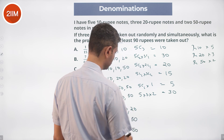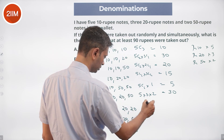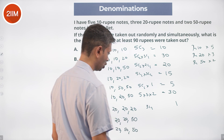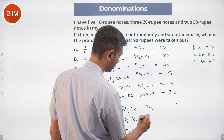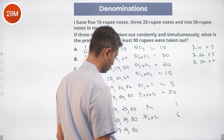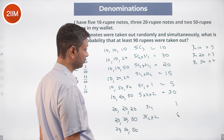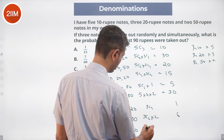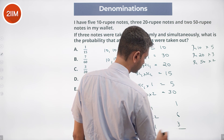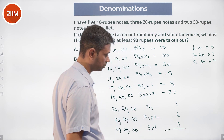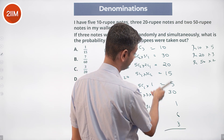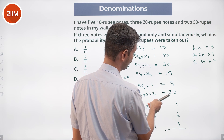Three 20s: 3C3 = 1 way. Two 20s and a 50: 3C2 × 2 = 3 × 2 = 6. One 20 and two 50s: 3 × 1 = 3. Adding all of this up: 3 + 6 + 1 = 10, plus 20 = 30, plus 30 = 60.